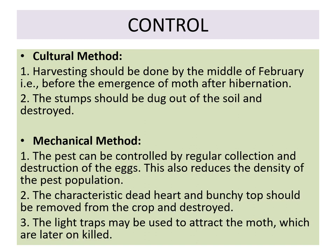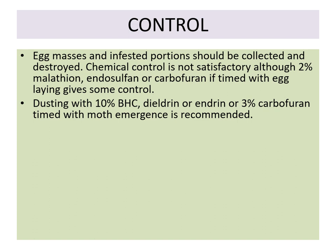For mechanical control, the pest can be controlled by regular collection and destruction of eggs, which also reduces the density of the pest population. The characteristic dead heart and bunchy top should be removed from the crop and destroyed. Light traps may be used to attract and kill the moths, and egg masses and infested portions should be collected and destroyed.